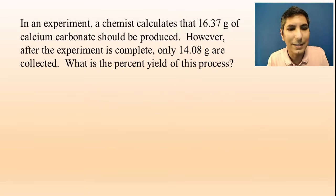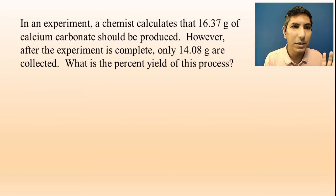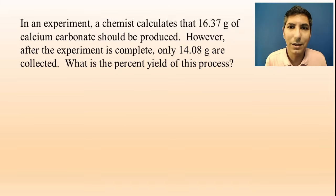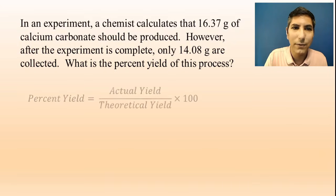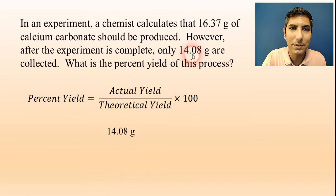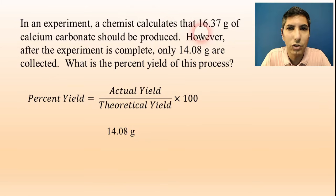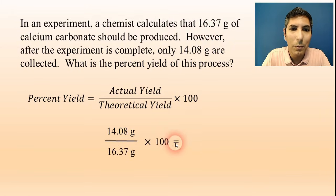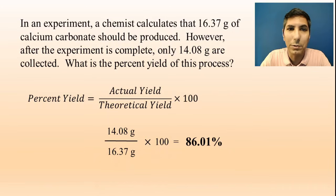Let's say a chemist calculates that 16.37 grams of calcium carbonate should be produced, but after the experiment only 14.08 grams are actually collected. What is the percent yield? We use the equation: actual yield is 14.08 grams (what we collected), theoretical yield is 16.37 grams (what we calculated). Dividing and multiplying by 100 gives a percent yield of about 86.01%. That's a fairly straightforward process.